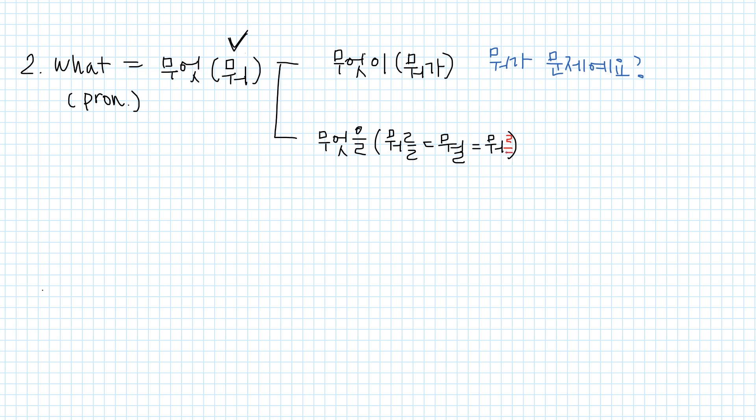Second one, what. In Korean 무엇 or the short form 뭐. It's more commonly used. These are pronouns, so when 무엇 is used as a subject, then subject particle 이가 should be attached. For example, 뭐가 문제예요? What's the matter? When 무엇 is used as an object, then object particle 을 is used. 무엇을, the short form 뭐를 or 뭘 or just 뭐.